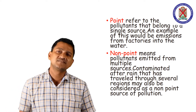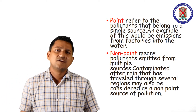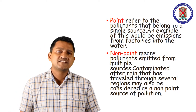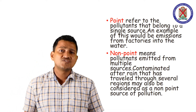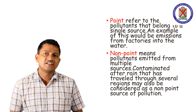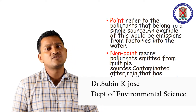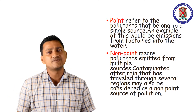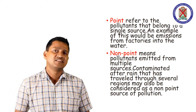That is an example of point source water pollution. Non-point source of water pollution means pollutants emitted from multiple sources. Contaminated runoff after rain that has travelled through several regions may also be considered a non-point source of pollution. After rainy season, different types of polluted water come to water streams — that unidentified source is known as non-point source of pollution.